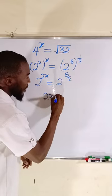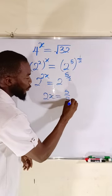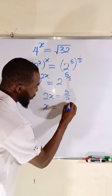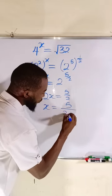Having the same basis, equate the exponents. We have 2x equal to 5 divided by 2. Divide both sides by 2. We have x equal to 5 divided by 2 times 2.